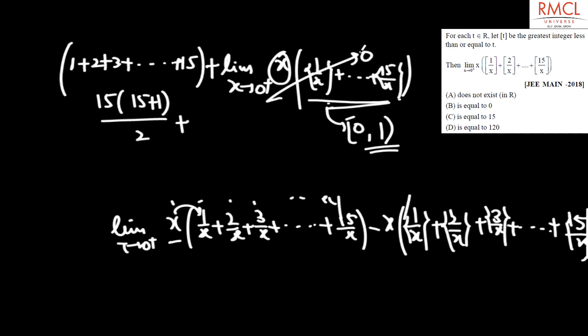The fractional part term goes from 0 to 0, so this is 0. The sum 1 plus 2 plus 3 up to 15 equals 120.